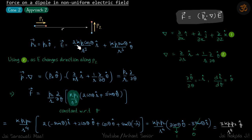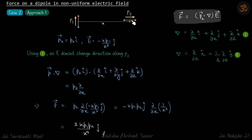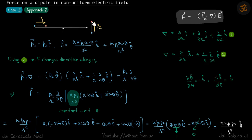We must write the full electric field because it changes direction at each point — there are different r-cap and θ-cap components at each position. This is the complete electric field at position r. Now p·del with p = p2 θ-cap: the r-cap component of del is zero for this dot product, so only the θ-cap component remains, giving p2/r · ∂/∂θ. We operate this on the full electric field, taking k·p1/r³ out as a constant.